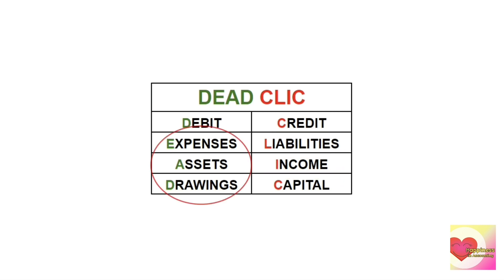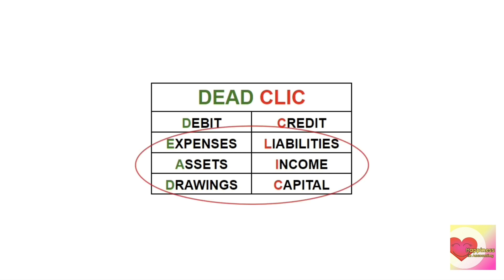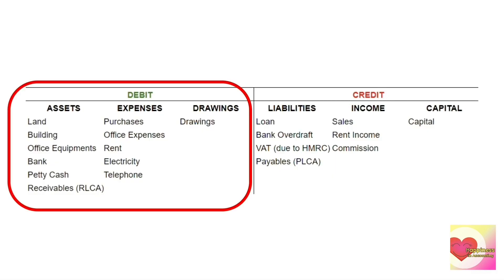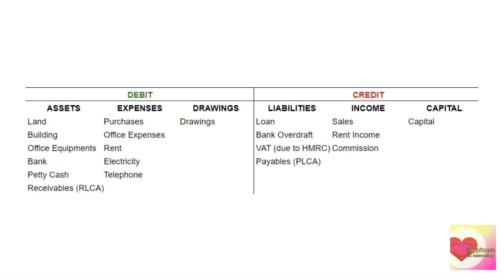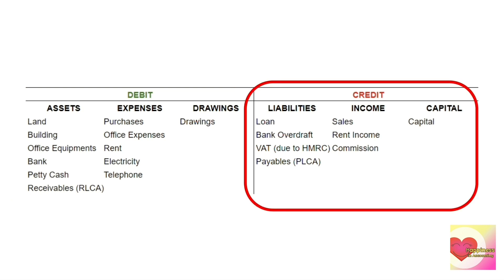There are three types of accounts on the debit side and three types of accounts on the credit side. Different accounts used in the business are sorted into these six types. On the debit side we have assets, expenses, and drawings, and on the credit side we have liabilities, income, and capital.